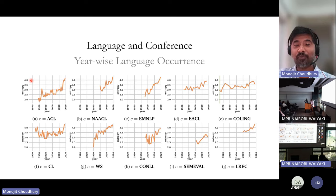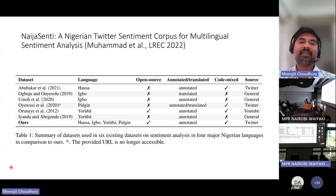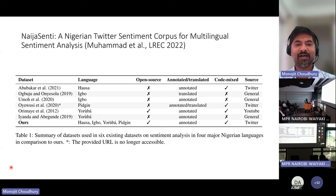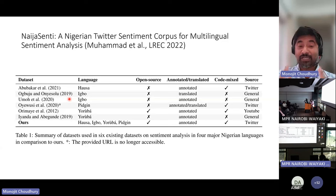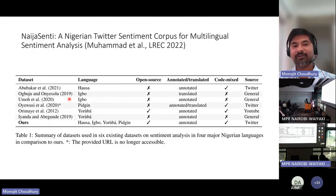To share another example: in a recent work with the Masakhane team, we created sentiment-annotated corpora for four Nigerian languages — Hausa, Igbo, Yoruba, and Pijin. Most prior work for these languages only started from 2019 onwards. This positive trend shows increasing focus on multilingual NLP, especially in Africa, starting from 2018–2019. An interesting question is why — and the answer is deep learning, and more specifically, LLMs.